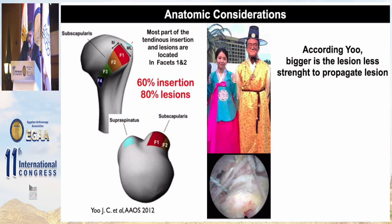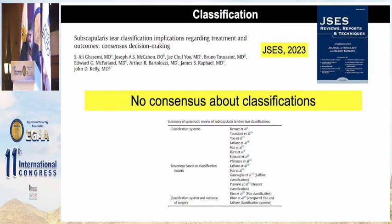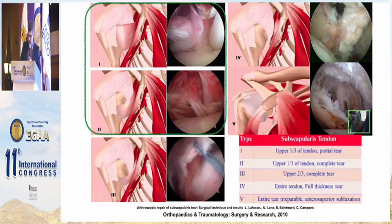According to Yeo, the bigger the lesion, the less strength required to propagate it. So these lesions must be repaired to avoid progression. Regarding classification, there is no consensus — as shown in a paper published this year — but we typically use the LAFOS classification for these lesions.